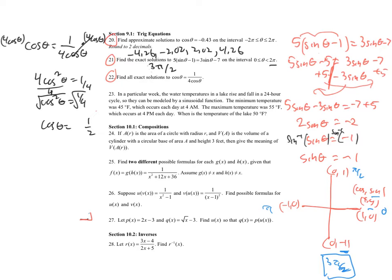Now we work both cases. Case one: cosine theta equals positive 1/2. Taking cosine inverse of both sides, if we do it in degrees, we get theta equals 60 degrees. This comes from a 30-60-90 special triangle where cosine is adjacent over hypotenuse. So 60 degrees is the same as π/3. That's only one answer — we also need the second answer, which is in the fourth quadrant where cosine is positive. That reference angle gives us negative 60 degrees.